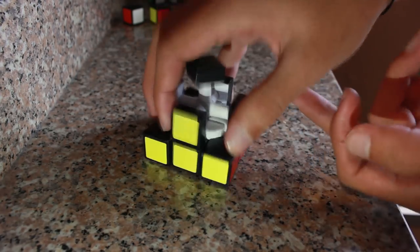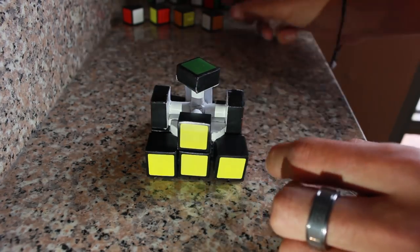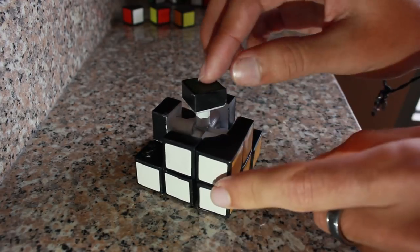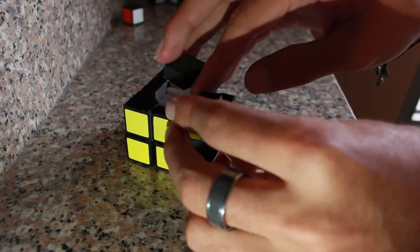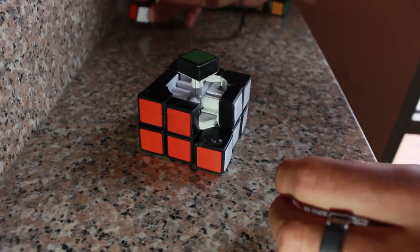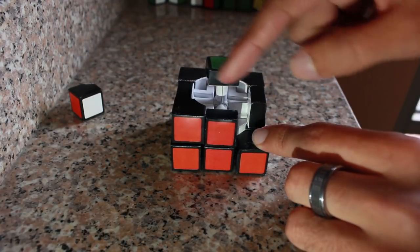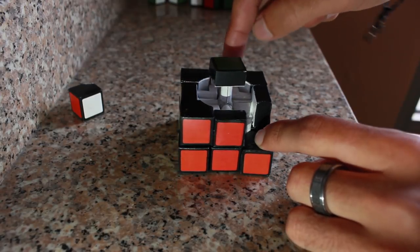Alrighty so now we should have the entire blue side finished as you can see here, and what we can do now is set it down and we're gonna start filling in these other edge pieces all around. Okay so before we put in this last red white piece we're actually gonna fill in the top green side first, and the way we're gonna do that is we're actually gonna be putting in pieces and rotating, so we're gonna start on the opposite side.